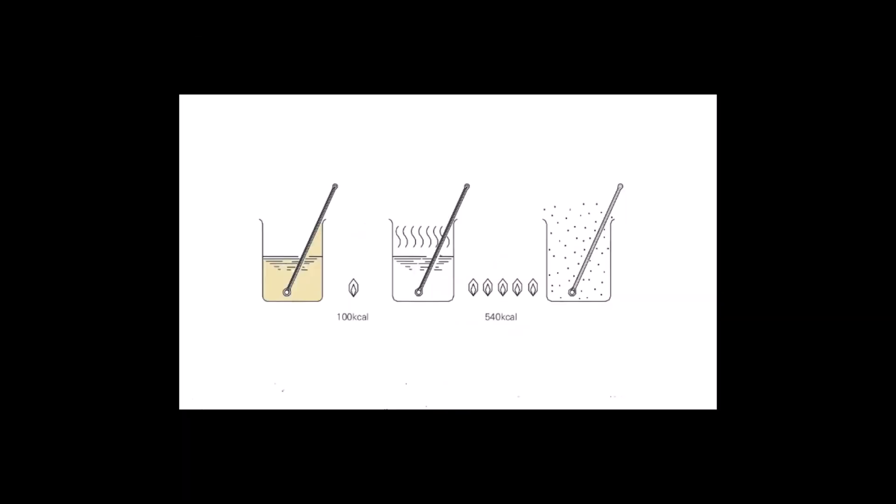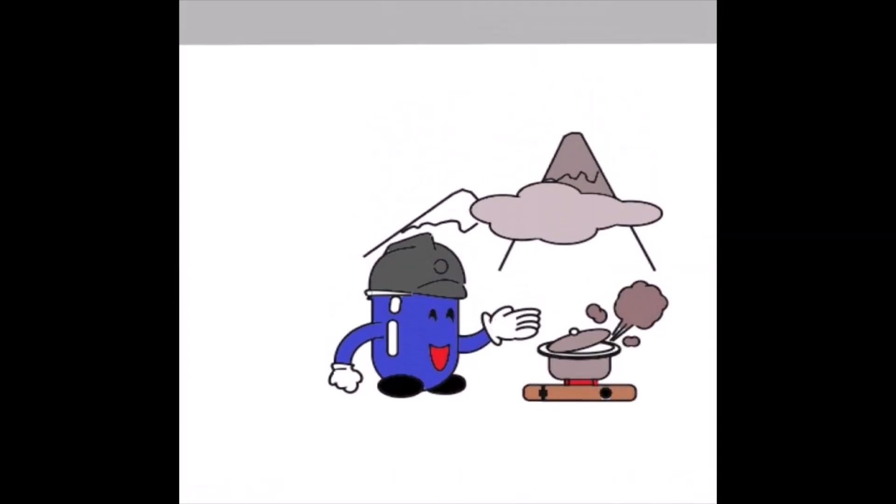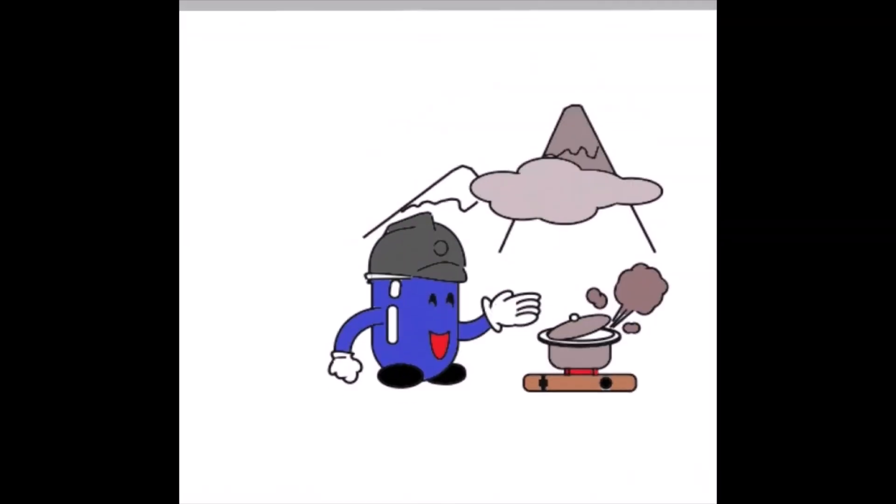Principle of chilled water generation: An absorption chiller is a chilled water generating device that uses water as refrigerant and lithium bromide as absorbent. For cooling, the latent heat of refrigeration is generally used, like when rubbing alcohol on the skin for injection. It is getting cooler because alcohol takes heat from the skin when evaporated.